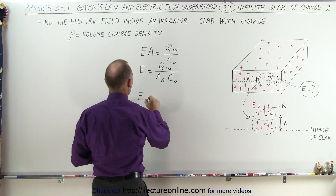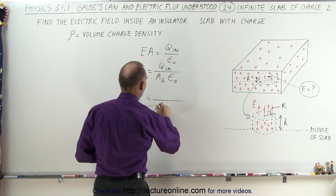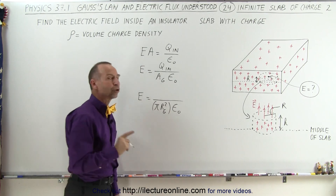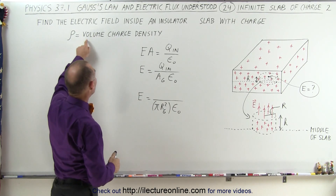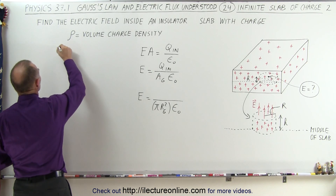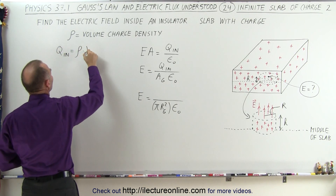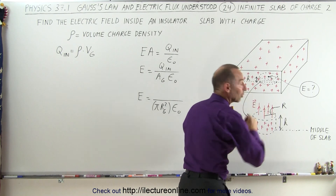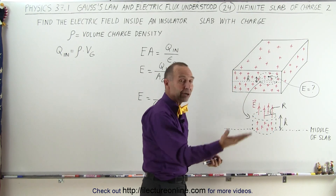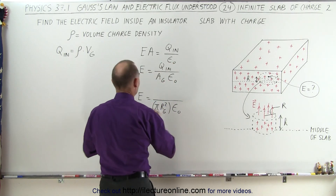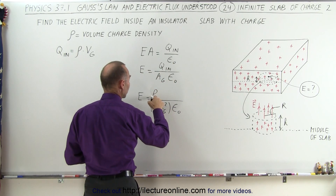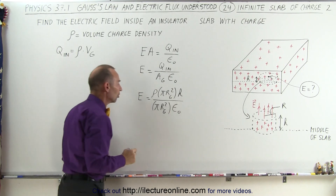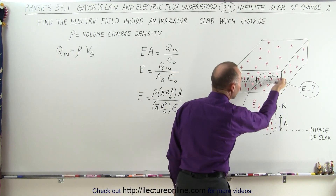So this is equal to, in the denominator we're going to get pi R sub-G squared times epsilon sub-naught. Now we still need Q inside. We're given the volume charge density, which means that Q inside is going to be equal to the volume charge density times the volume of the Gaussian surface — all the charge contained within that cylindrical shape. The volume of a cylinder is the area of the base times the height, so that will be the volume charge density times the area pi R sub-G squared times the height H. And H is of course the distance above the middle of the slab.